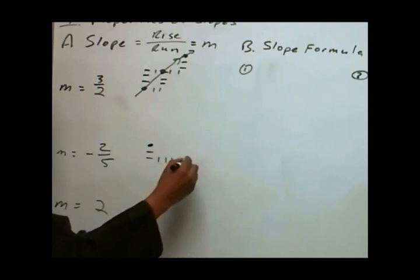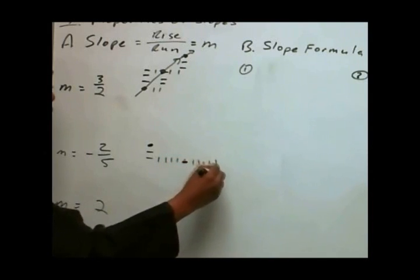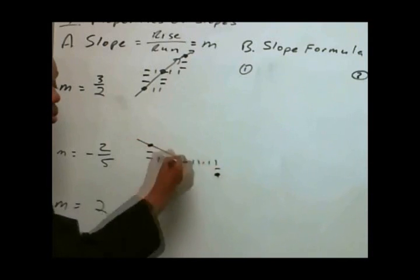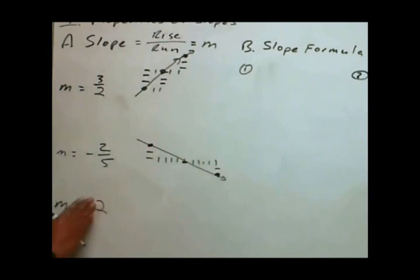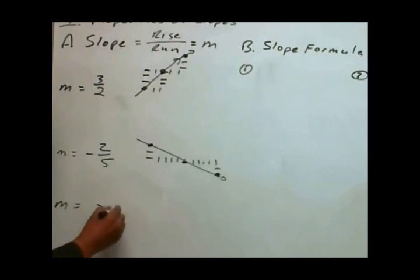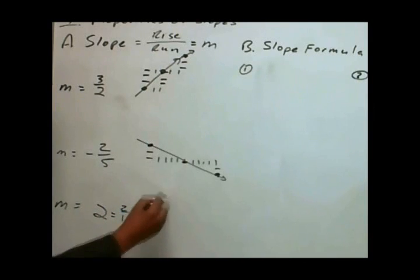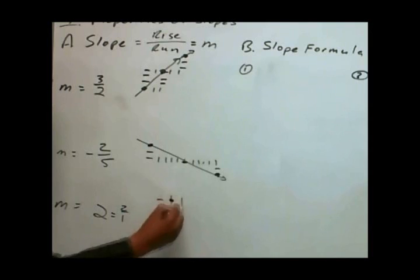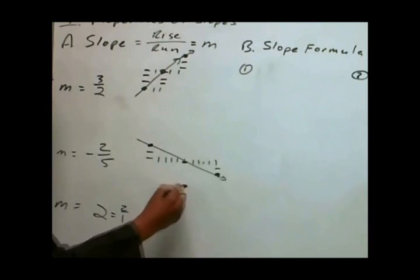Or you can run five — one, two, three, four, five — and then fall two. For slopes that are a single digit, like two, you assume that the run is one. So we look at two and assume we're going to rise two and run one. From any given point: rise two, run one — or run one and rise two.